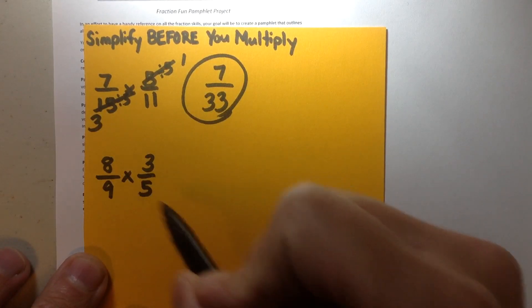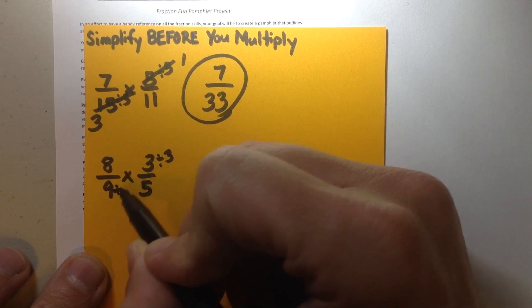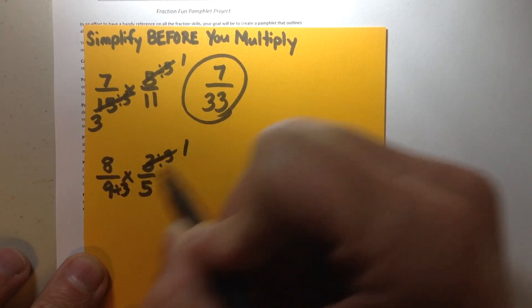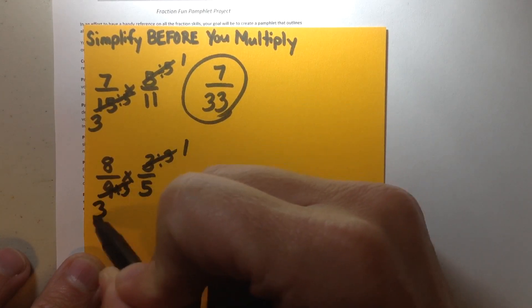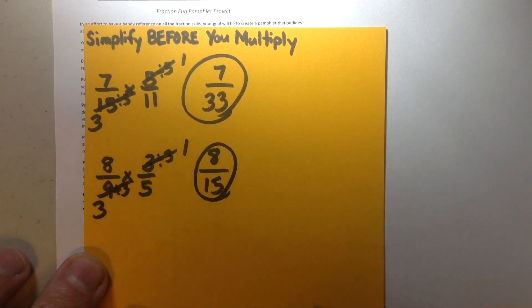You can notice here that the 8 and the 5 share no common factors, but the 3 and the 9 share a common factor of 3. And I'm going to show that I've divided that by 3 to get 1, and that divided by 3 to get 3. 8 times 1 is 8, and 3 times 5 is 15, giving me that correct answer.